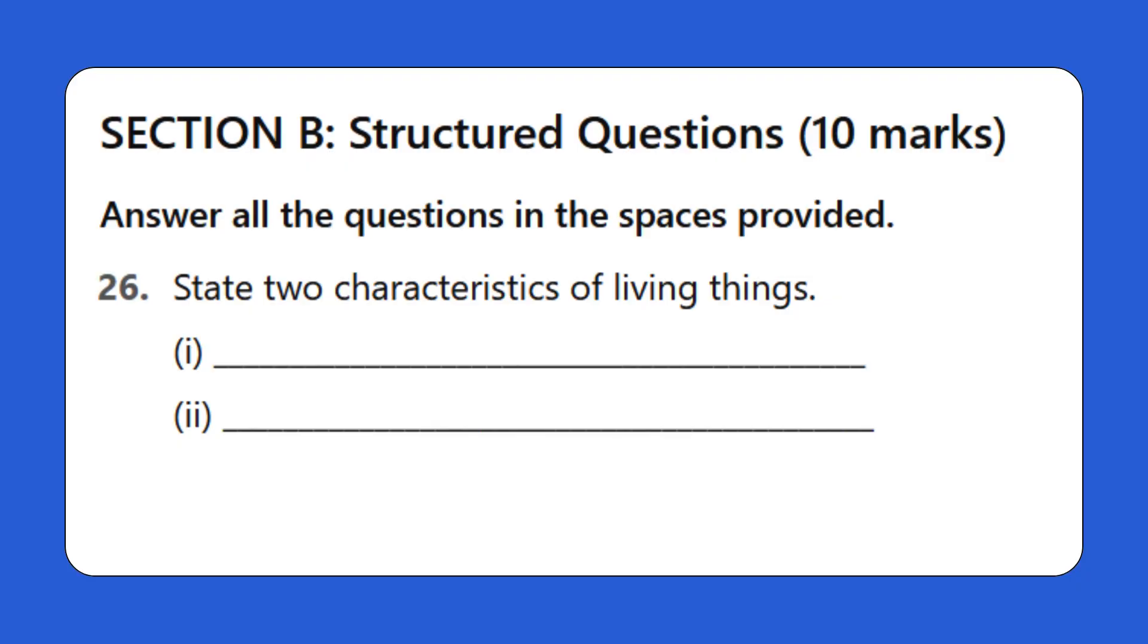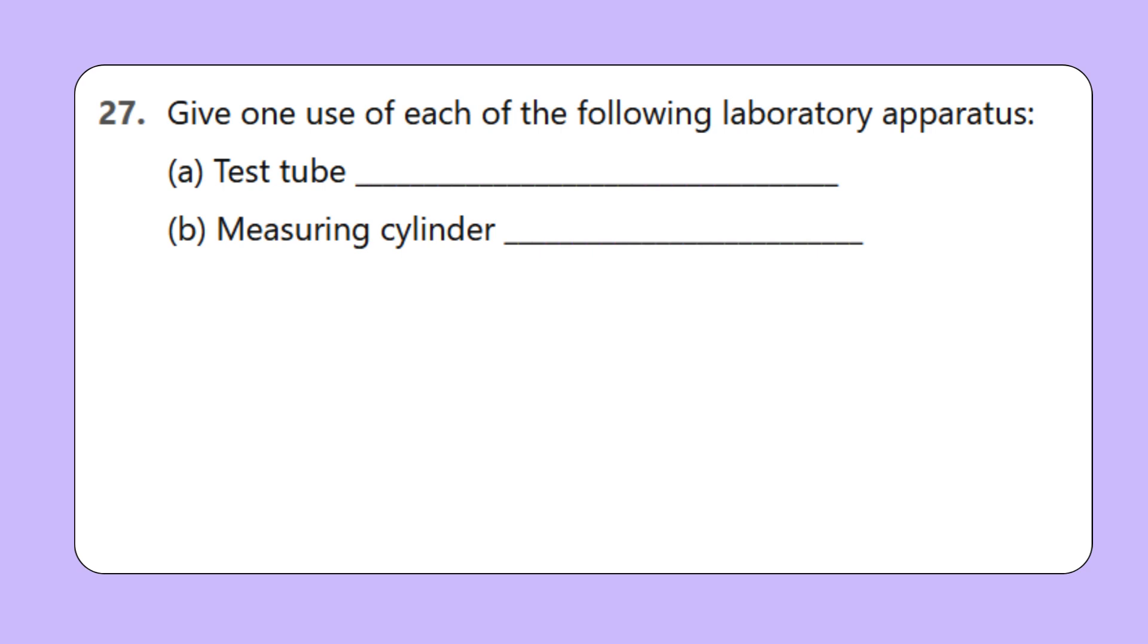Section B: Structured questions, 10 marks. Answer all the questions in the spaces provided. Question 26: State two characteristics of living things. Question 27: Give one use of each of the following laboratory apparatus. A. Test tube, B. Measuring cylinder.